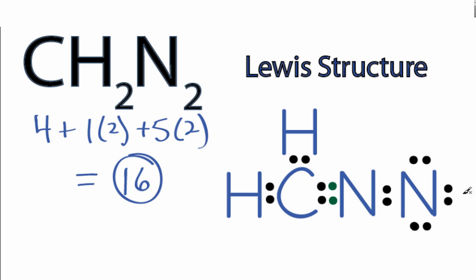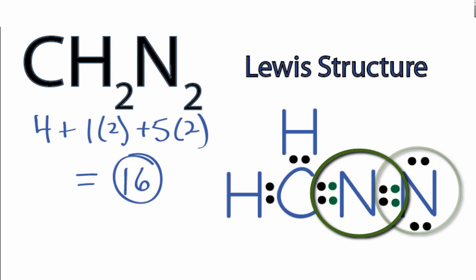Let's move 2 more, and we'll take these here and put them right here to form another double bond between the 2 nitrogens. The nitrogen on the end still has 8 valence electrons, but now that nitrogen in the center has 8 as well.